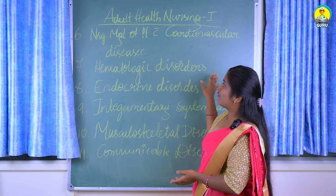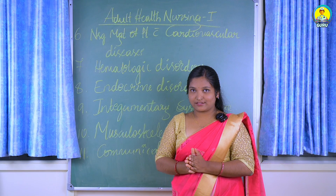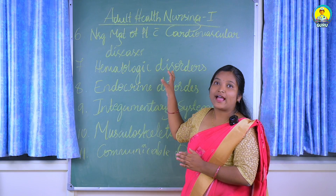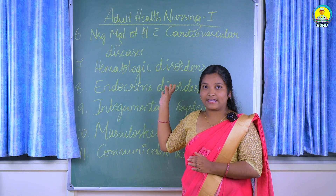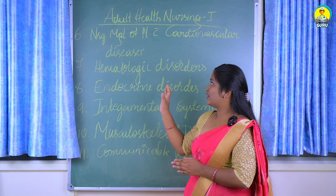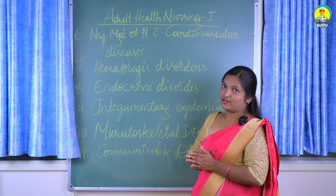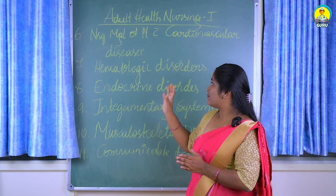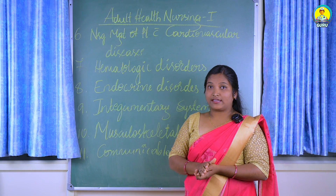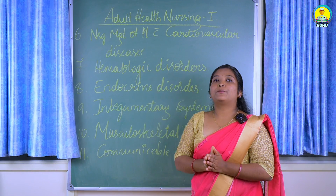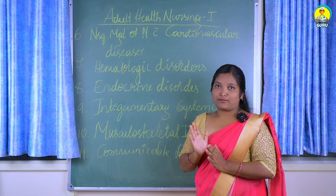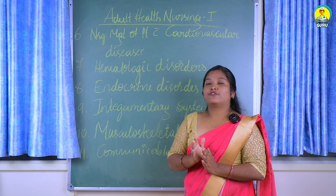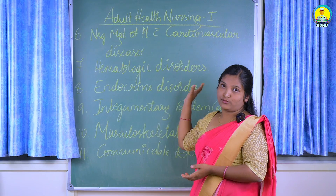The next unit is nursing management of a patient with hematologic disorders. This means we are going to study about blood disorders — disorders related to blood. Here we will study about anemia and leukemia, including their nursing management. The seventh unit covers anemia management and leukemia management. Important questions from this unit include prioritized nursing care or interventions for leukemia and proper nursing management for anemia in an adolescent girl.